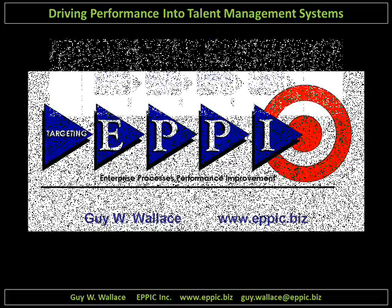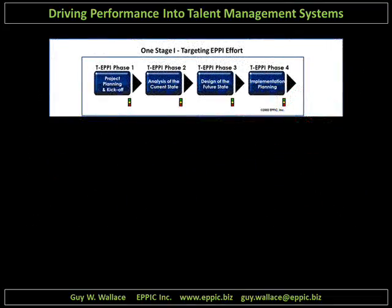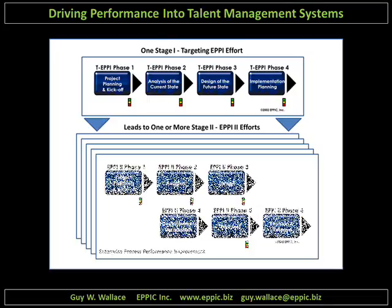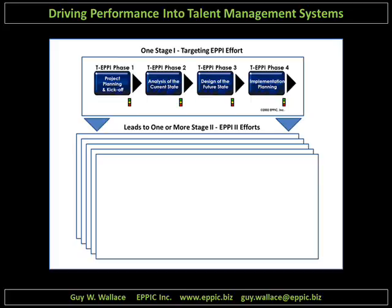EPI has two stages. Stage one: Targeting EPI. Stage two involves various interventions that could be framed by a DMAIC process or another ADDI type process to actually create and implement the interventions determined necessary in stage one. Stage two, EPI intervention implementation, could include process re-engineering using Theory of Constraints, Lean, and Six Sigma, plus other methodologies.